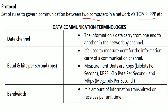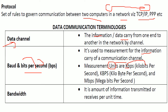In data communication technology, a data channel is the medium that carries information or data from one end to another in a network. Baud or bit rate tells us how fast data is moving — it is used to measure the information-carrying capacity of a communication channel. Measurement units include kbps (kilobits per second), KBps (kilobytes per second), and Mbps (megabits per second).